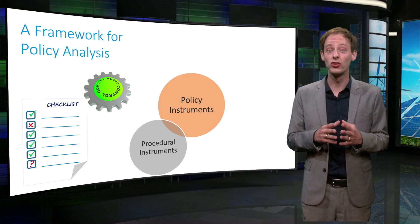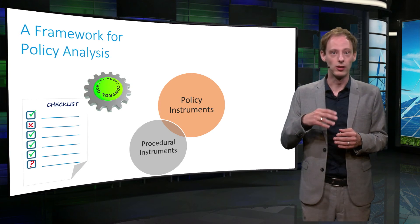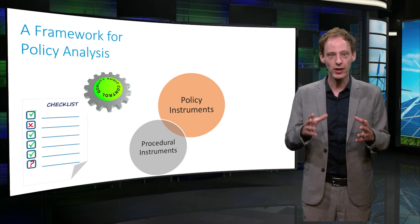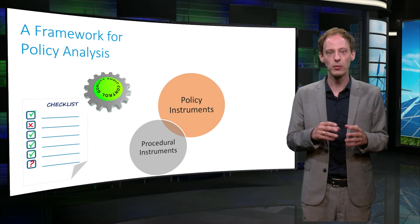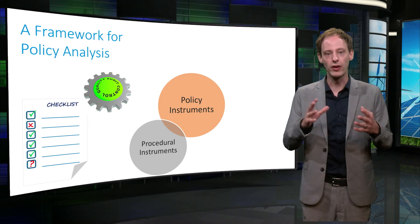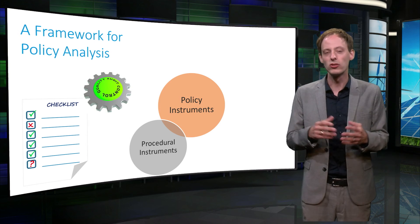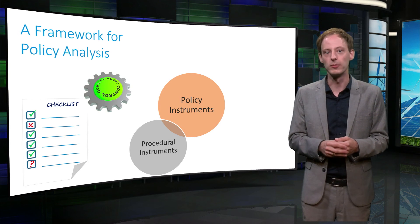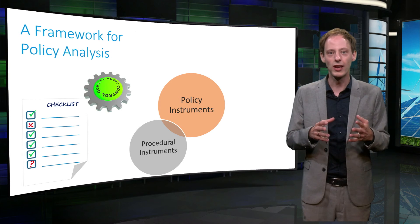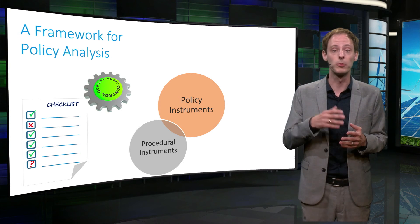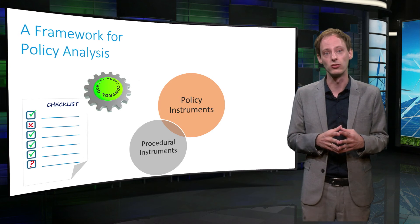The next category is procedural instruments, like mandatory audits or energy management protocols at companies. They can be effective for things that companies normally just don't think about, because it's not in their regular frame of mind. For instance, how many times do you think does a company look at their energy bills? This can help firms to keep track of their energy performance and to optimize their processes with regard to energy efficiency.